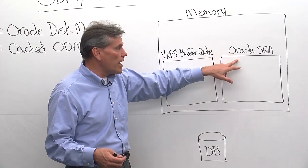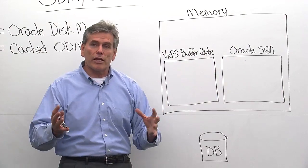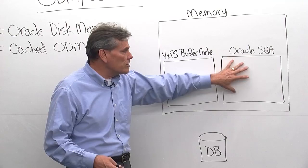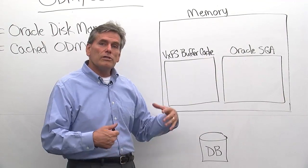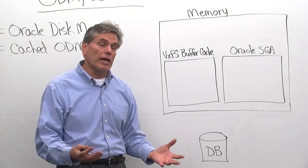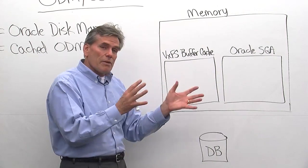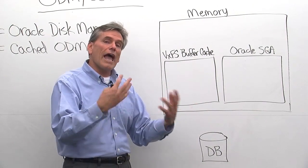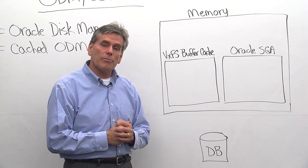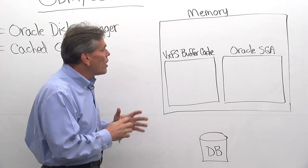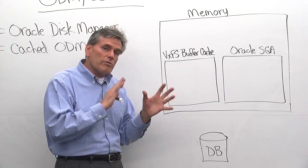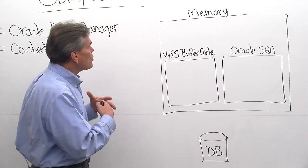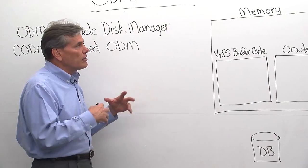Databases traditionally like to do things with raw devices because they like to do their own memory management and their own I/O management. For example, Oracle has its memory area called the SGA, or System Global Area, and that's where it does all of its I/O and memory management. Raw devices are actually really hard to deal with, so we add to that by allowing the database to be in a file system. But we wanted to get past some problems with the file system, and so that's the whole idea of ODM.